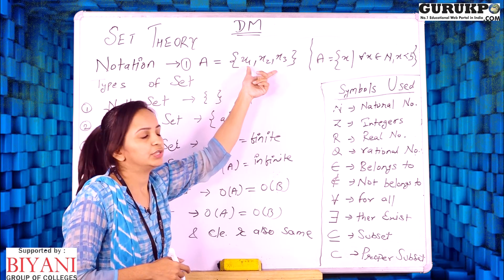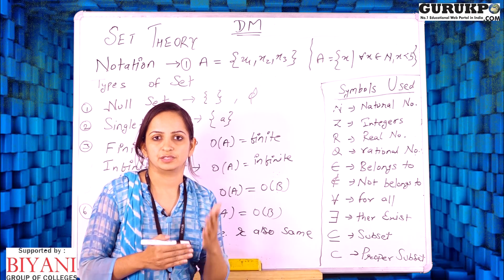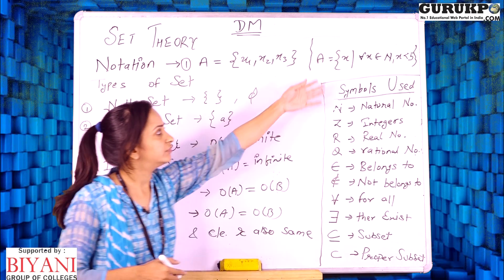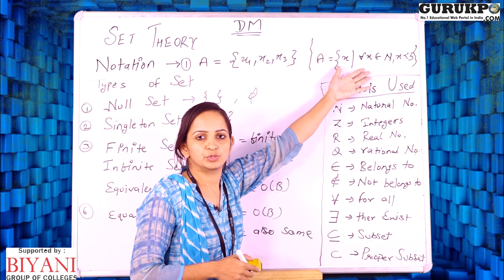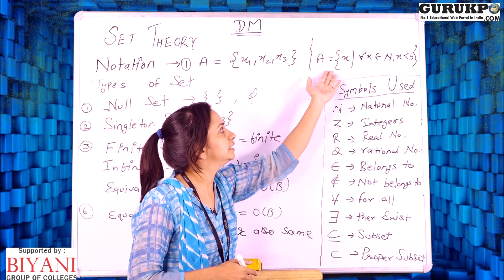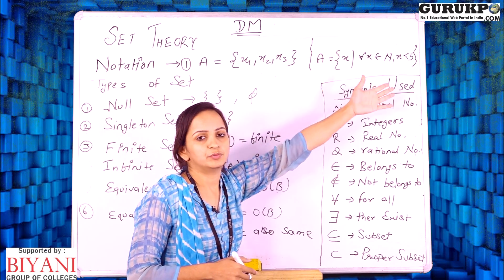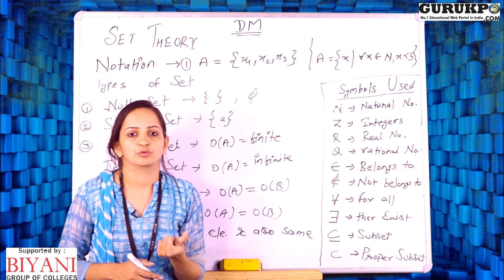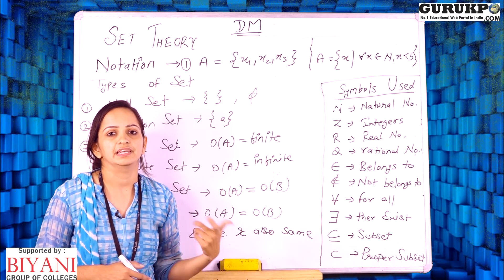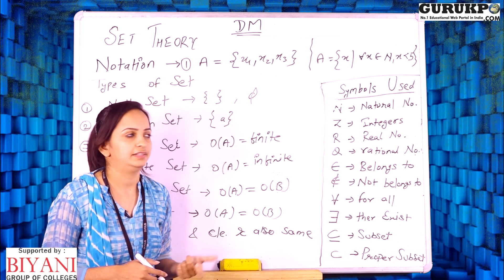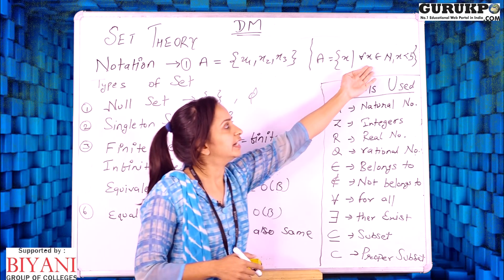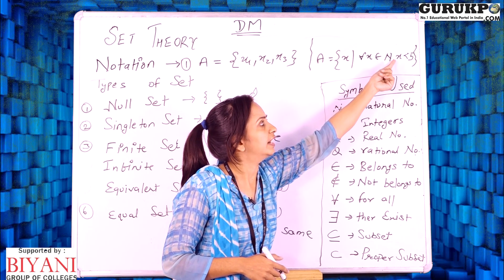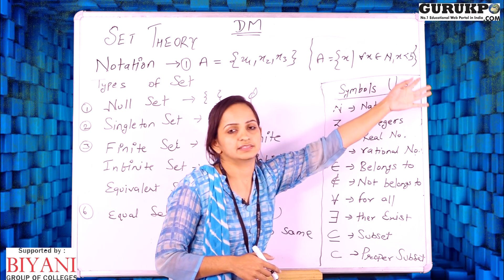The second way to represent a set is in set-builder form. In the curly braces we denote a variable x, which can be any element in the set, and we define x mathematically — for example, for all x belonging to N, x is less than 5.